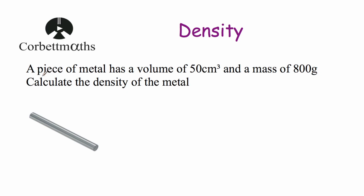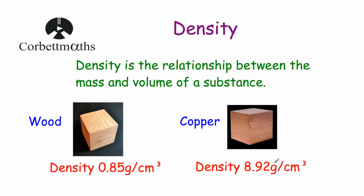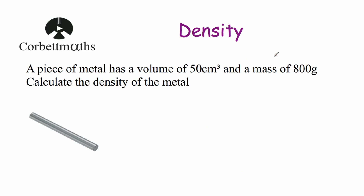Our first example says a piece of metal has got a volume of 50 centimetres cubed and a mass of 800 grams. We've been asked to calculate the density of the metal. Remember density — like copper at 8.92 grams per centimetre cubed — means the mass of one centimetre cubed of the material. So we don't want the mass of 50 centimetres cubed; we want the mass of just one centimetre cubed. So if we divide 800 by 50, we'll find the mass of one centimetre cubed of this metal.